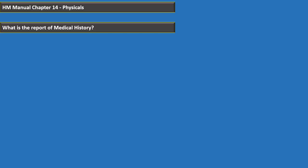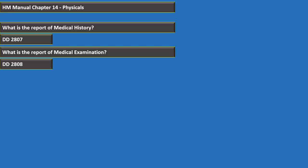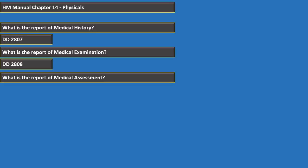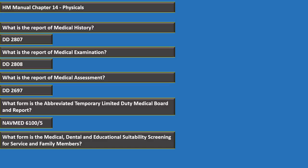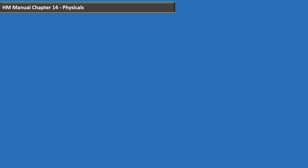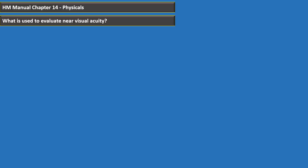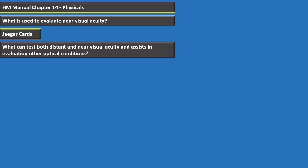The report of medical history is the DD-2807. The report of medical examination is the DD-2808. The report of medical assessment is the DD-2697. The abbreviated temporary limited duty medical board and report form is NAVMED 6100/5. The medical, dental, and educational suitability screening for service and family members is NAVMED 1300/1. Jaeger cards are used to evaluate near visual acuity. An Armed Forces Vision Tester (AFVT) can test both distant and near visual acuity and assist in evaluation of other optical conditions.